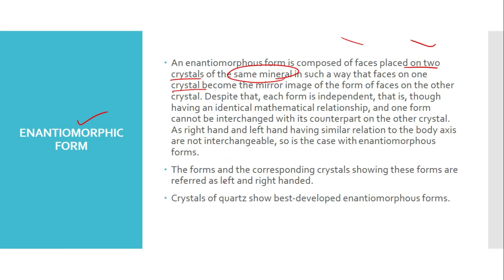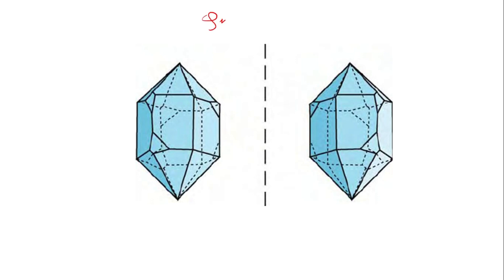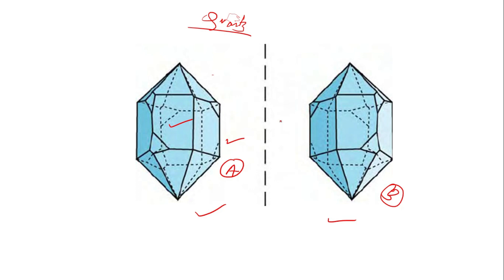The forms and corresponding crystals showing these properties are referred to as left-handed and right-handed. Crystals of quartz show the best developed enantiomorphic forms. Looking at the diagram, these are two different quartz crystals — A and B — and you can see they are mirror images of each other. These are your enantiomorphic forms.